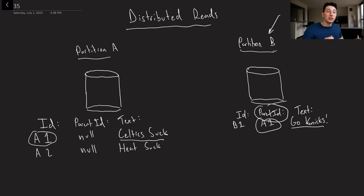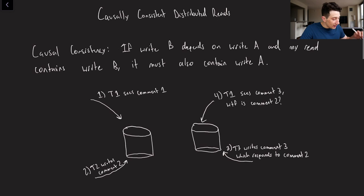If I read partition B, I see that this comment GoNix has a parent comment with ID A1, where A1 is held on partition A, and that is the comment Celtics suck. We need to make sure we are maintaining our causal relationship when we perform reads, meaning that if I see this comment B1, I better also see A1, or else we're going to have a problem. Our data is not going to make sense. To define causal consistency in a more clear way, if we have two writes A and B, and B depends on write A, and I have a read from a database that contains write B, my read better also contain write A, or else my read is not causally consistent.